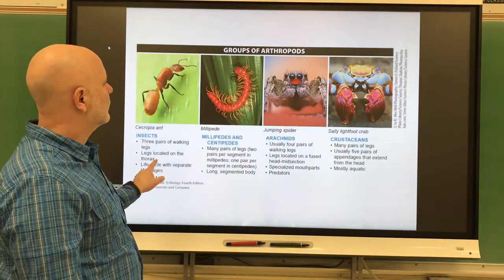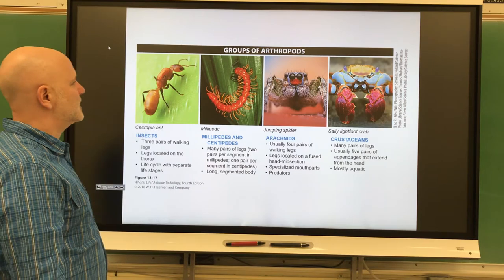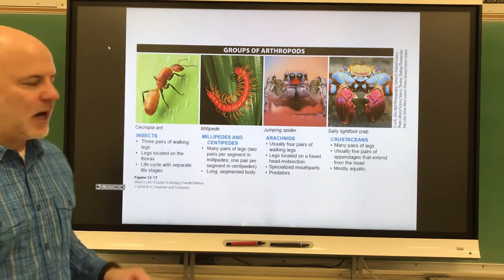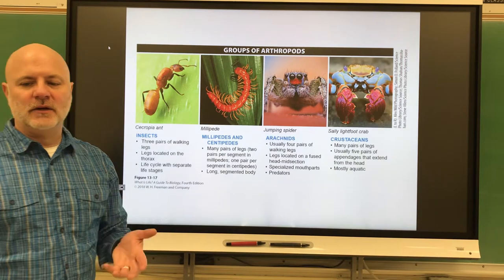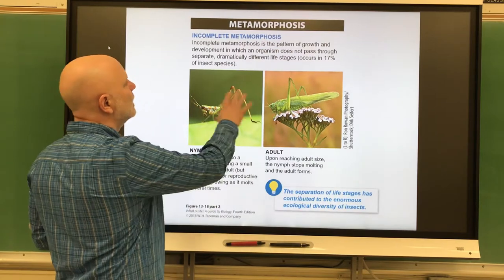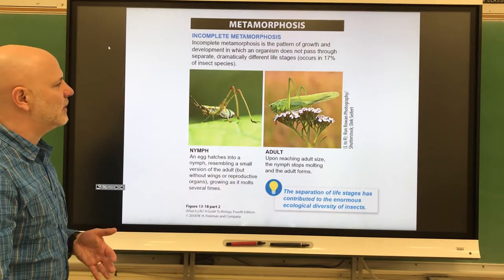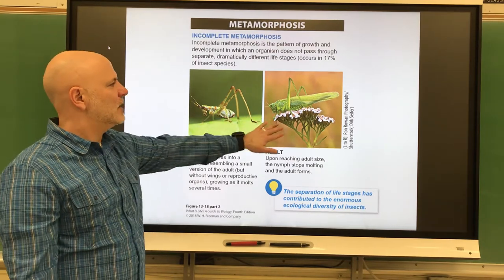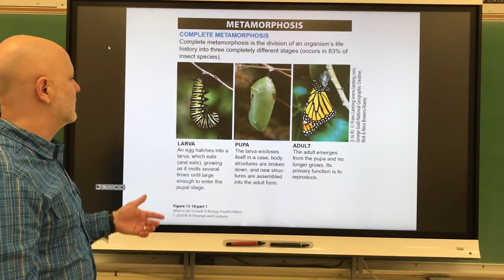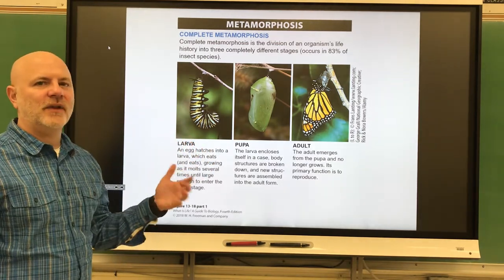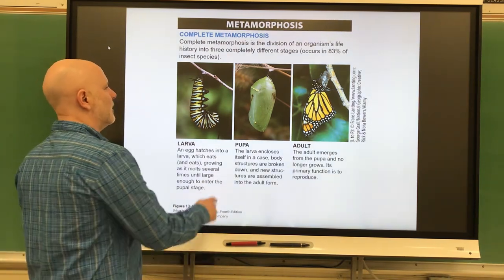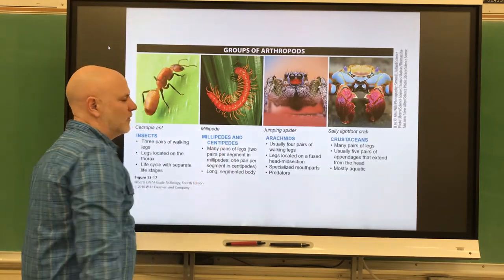This is showing a dust mite. Looking at the major groups: first are insects. Insects have three pairs of walking legs located on the thorax. Their life cycle can consist of separate life stages. This is showing incomplete metamorphosis, where the young and adults look fairly similar — adults have wings. Others go through a major metamorphosis, as we see with butterflies, moths, bees, wasps, and ants. Adults have wings or reduced wings.